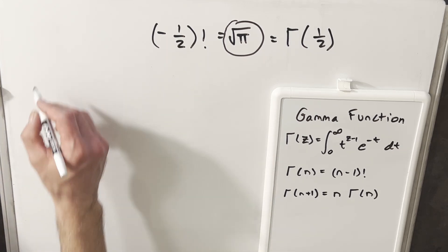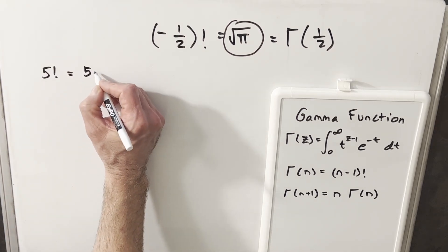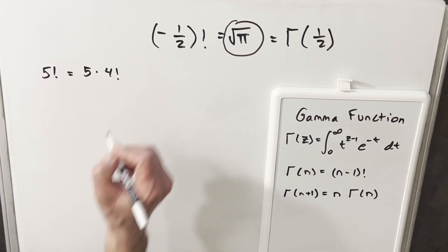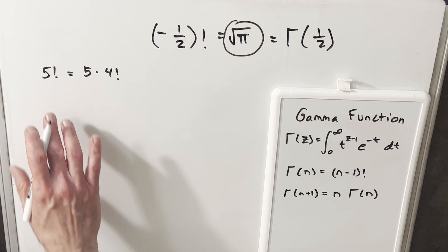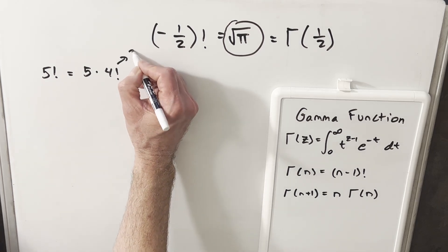A quick example of this in terms of the factorial, right? If you have 5 factorial, well, we know that's the same thing as 5 times 4 factorial. Well, let's say I don't know the value of 5 factorial. Let's say my calculator is not handy. But I do know 4 factorial. I know 4 factorial is 24.